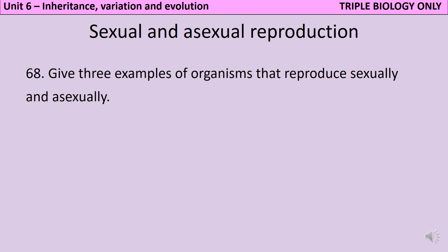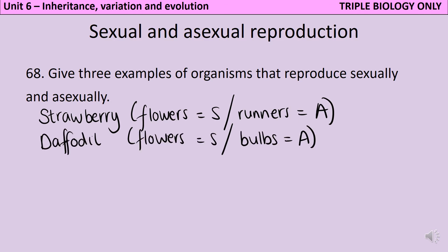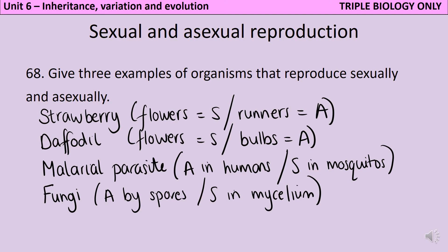There are four examples listed in the specification. Strawberry plants can produce flowers to reproduce sexually when they want to introduce variation, or they can produce runners to reproduce asexually. Daffodils can produce flowers to reproduce sexually, or they can produce bulbs to produce clones. The parasite that causes malaria reproduces asexually within its human host, but sexually when it's in its mosquito host. And finally, fungi are also able to reproduce in either way - their spores allow asexual reproduction, but they're also able to undergo sexual reproduction.